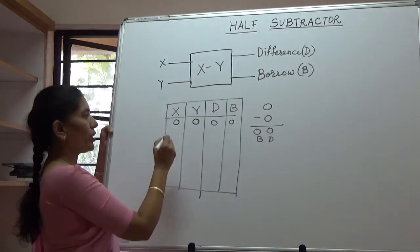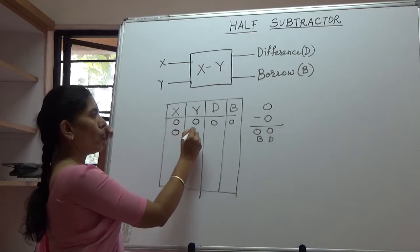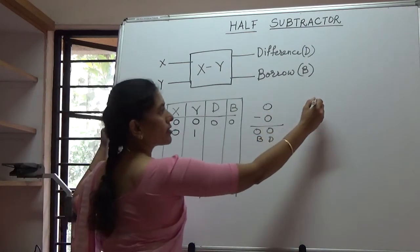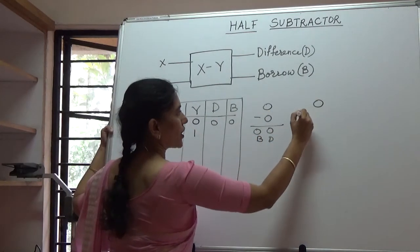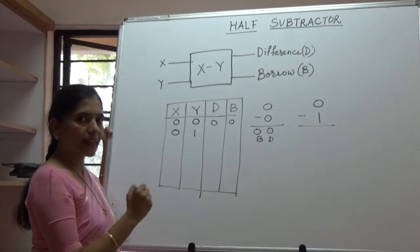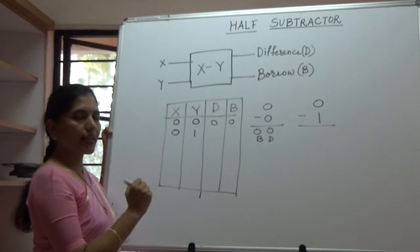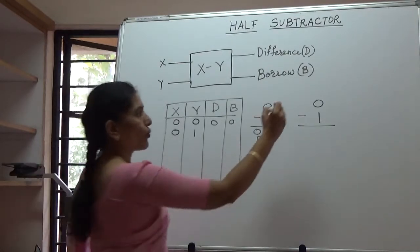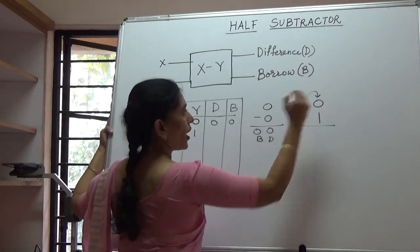Let's take the second combination that is 0, 1, that means a 1 is being subtracted from a 0. As you know 1 is greater than 0 and therefore a direct subtraction cannot be done. So we need to borrow a 1 from a higher position.